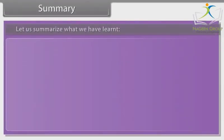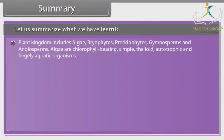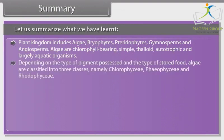Let us summarize what we have learned. The plant kingdom includes algae, bryophytes, pteridophytes, gymnosperms, and angiosperms. Algae are chlorophyll-bearing, simple, thaloid, autotrophic, and largely aquatic organisms. Depending on the type of pigment possessed and the type of stored food, algae are classified into three classes: Chlorophyceae, Phaeophyceae, and Rhodophyceae.